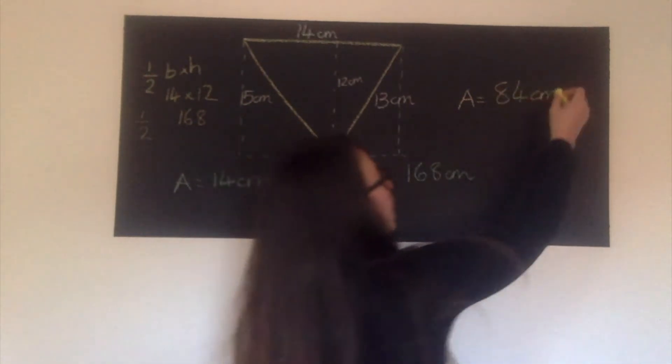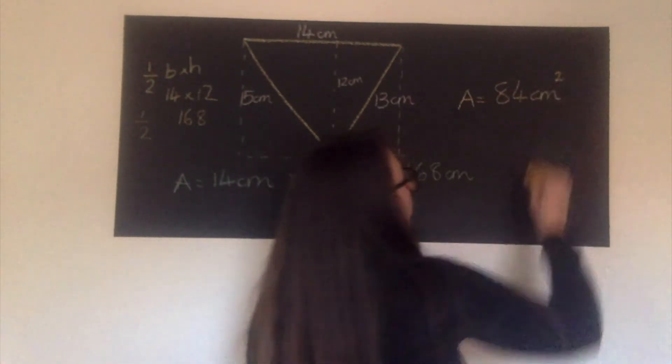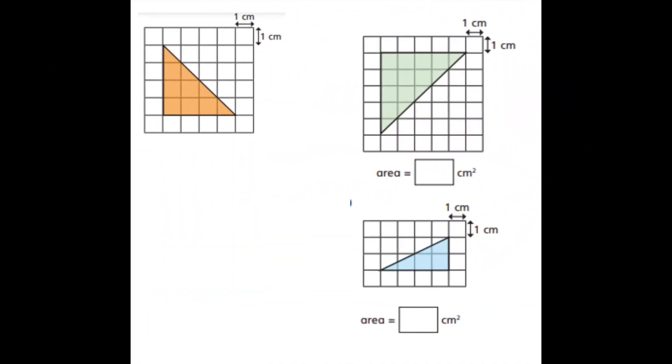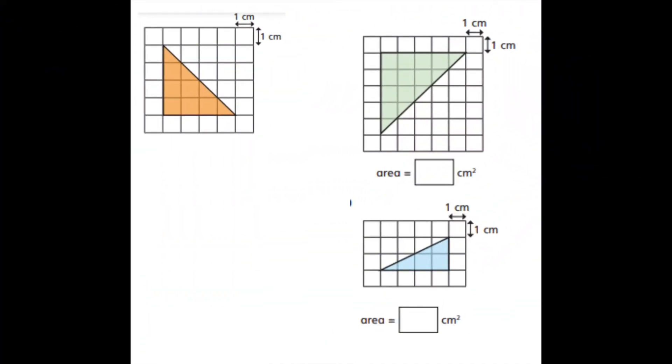is 84 centimeters squared. Just like we were before, we need to use squared. And now I want you to see if you can use that formula to see if you can work out the area of these triangles. Now, if you're stuck, your first step could be, turn these into squares or rectangles, count the squares, and then half it. See what answer you get.